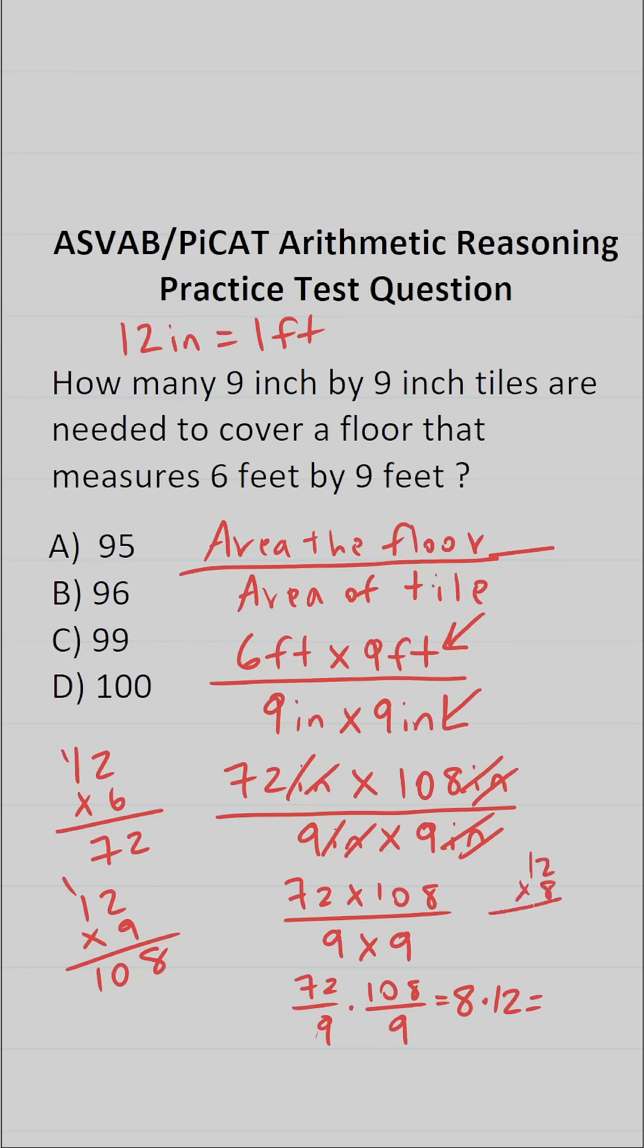I'm going to do that off to the side so as not to make a mistake. Eight times two is 16, carry a one. Eight times one is eight plus one is nine. So in other words, we're going to need 96 pieces of tile to cover this floor.